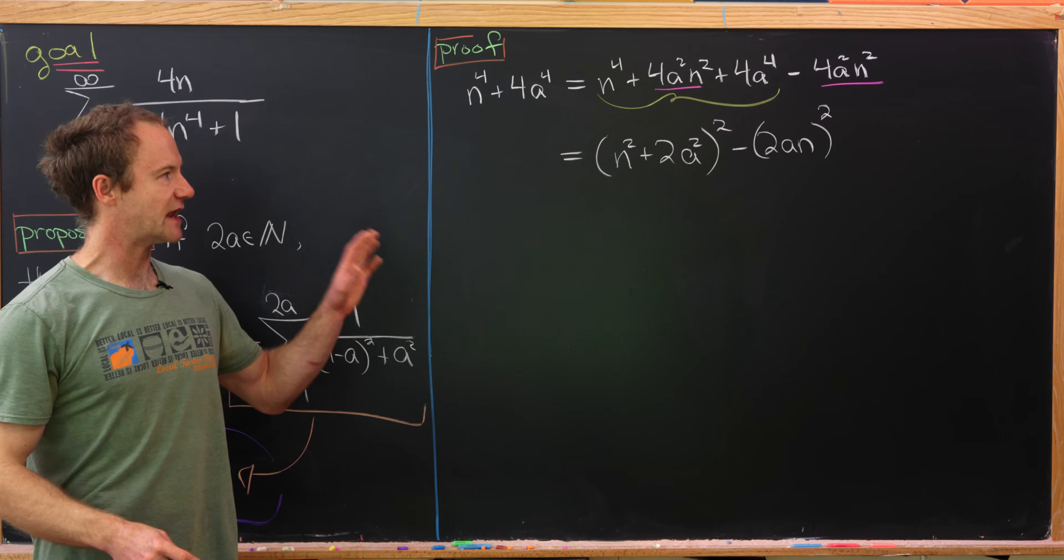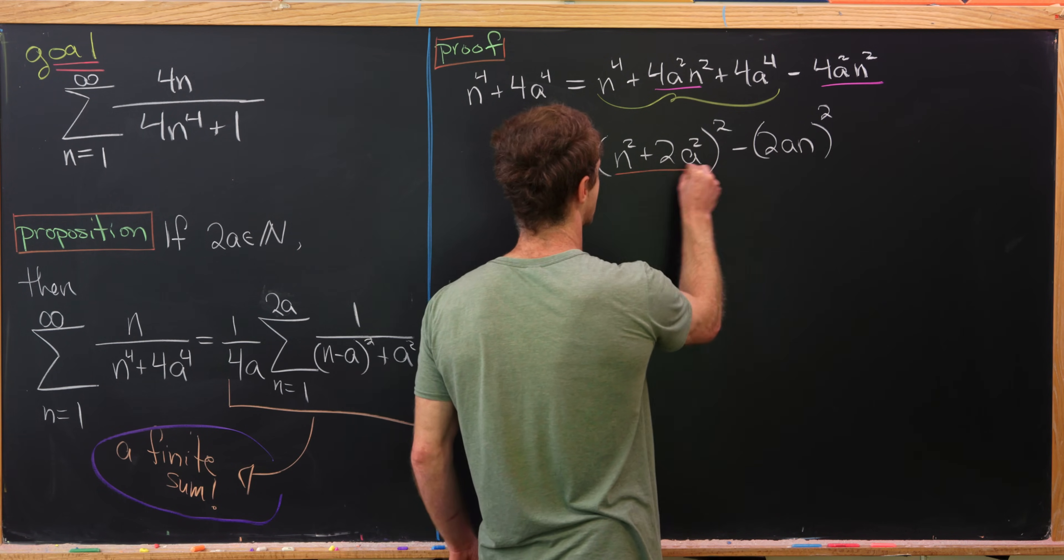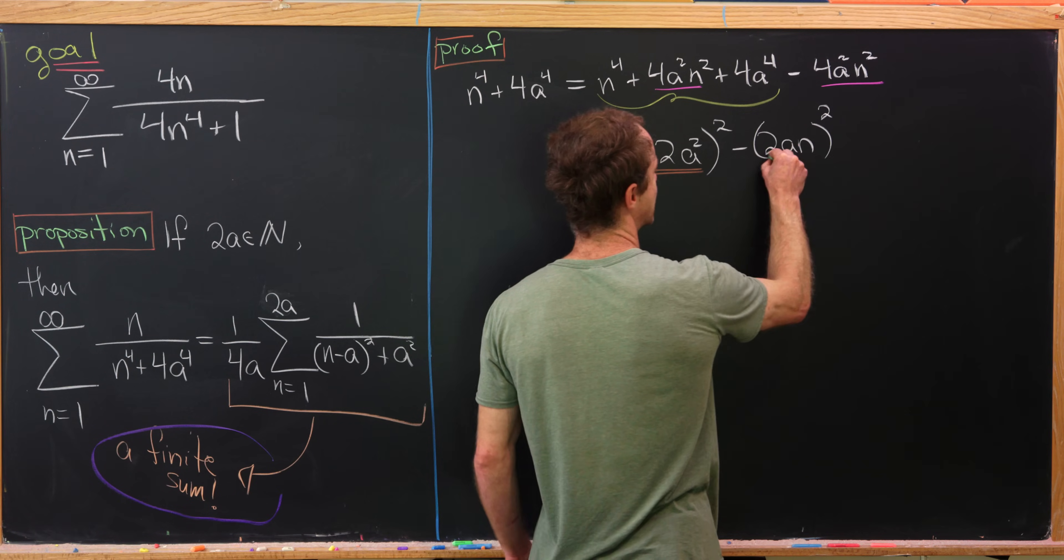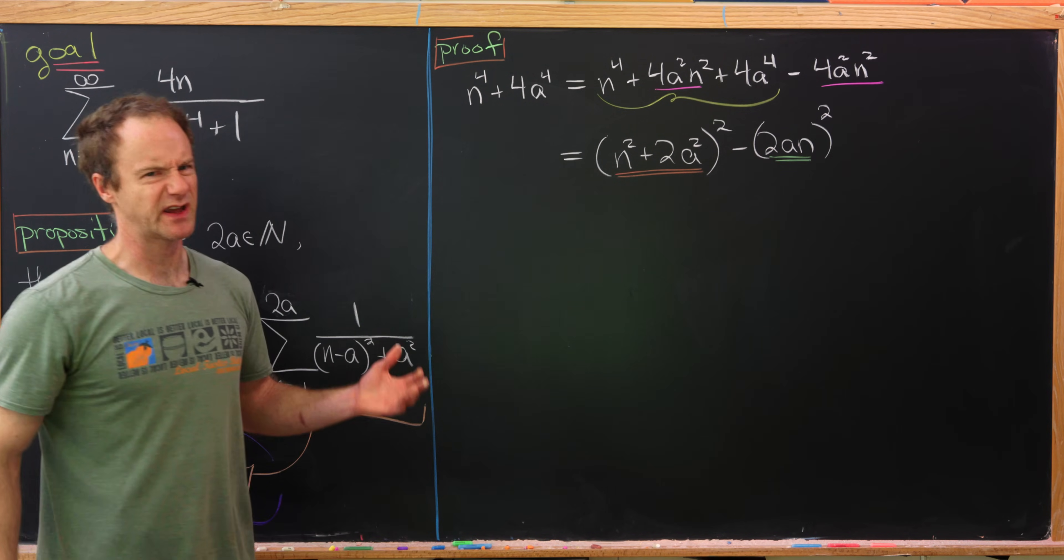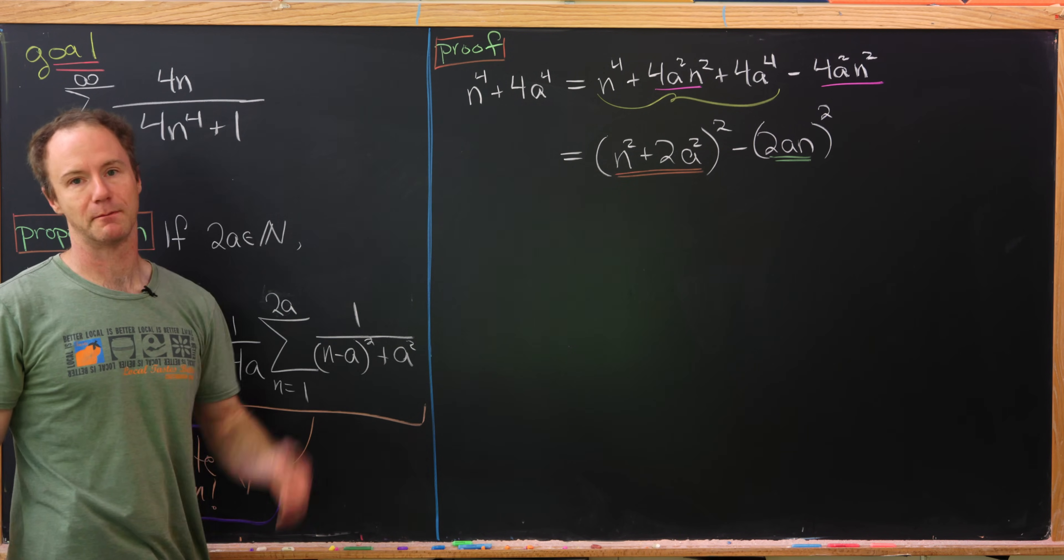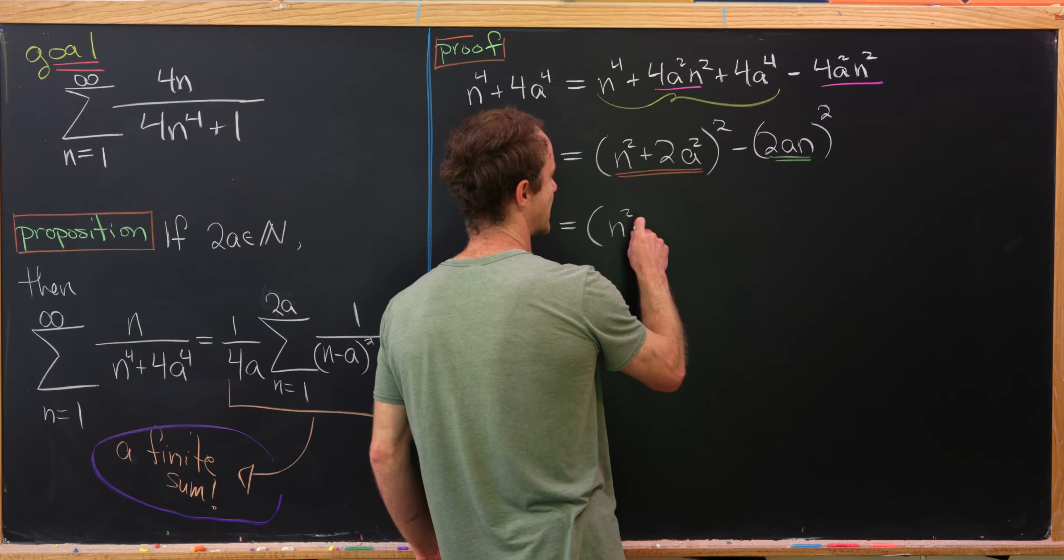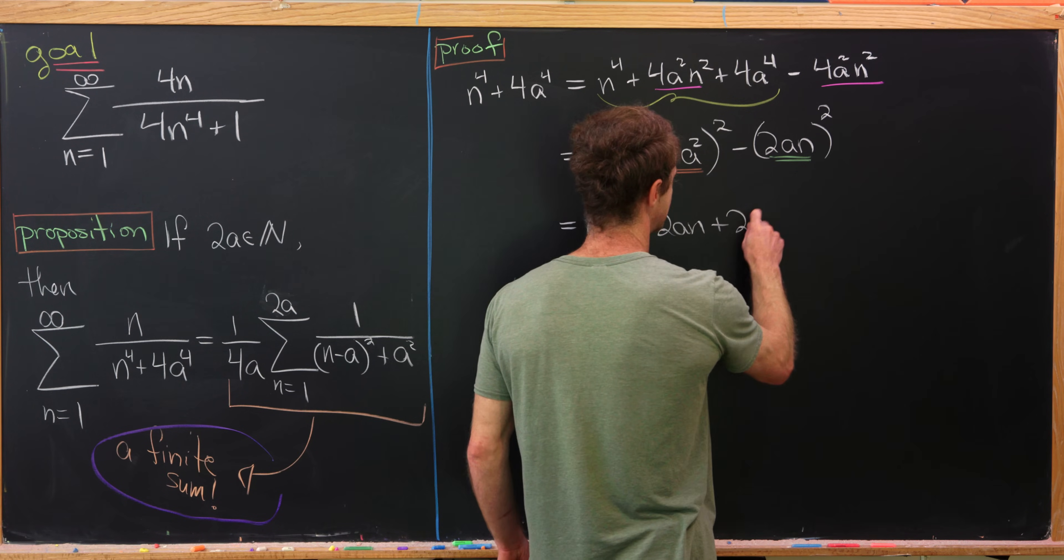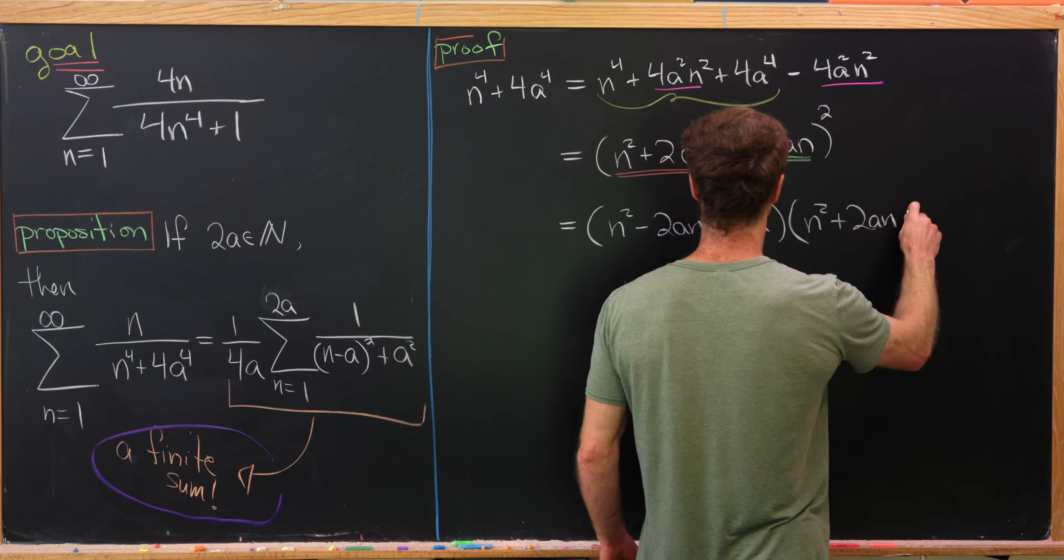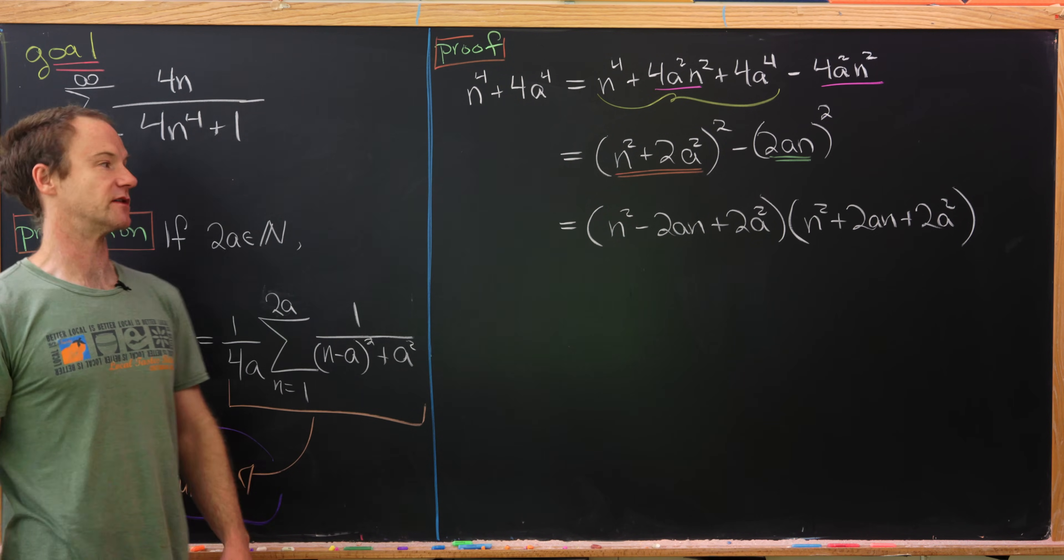But what do we have here? Now we have a difference of squares. We have this brown underlined stuff squared and then also this green underlined stuff squared. So we can obviously factor that as brown plus green times brown minus green. So let's do that. So this is going to be equal to n squared minus 2an plus 2a squared times n squared plus 2an plus 2a squared. So there it is with the difference and then the sum. I just rewrote it a little bit.